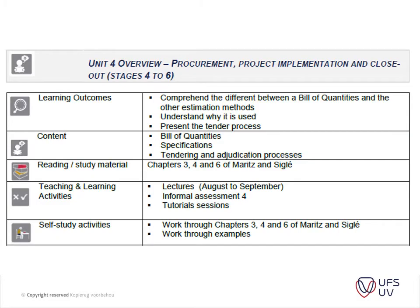We're basically going to look at chapters 3, 4 and 6 of Meritz and Sieglie. It's not a lot of work — chapter 3 being probably the bulk of the work. A lot of the information in chapter 3 is not really that relevant, especially the history part of it. So I'm going to highlight the most important sections for you during these three lectures.